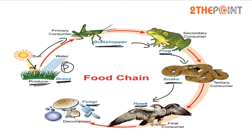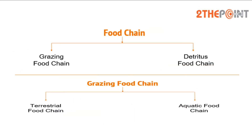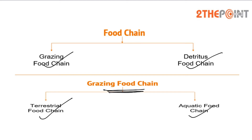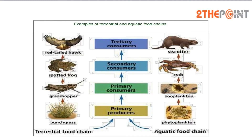Two main types of food chains are found in nature. One is the grazing food chain and the other is the detritus food chain. The grazing food chain has two branches: one is the terrestrial food chain and the other is the aquatic food chain.